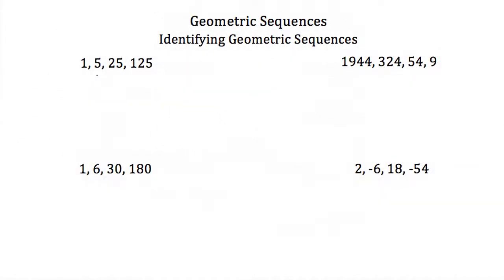So now that we know what a geometric sequence is, let's figure out if these four sequences are geometric. Our first sequence, 1, 5, 25, and 125 — well if we look at 1 and 5, to get to 5 from 1 we would have to multiply by 5. If we multiply 5 by 5, we do indeed get 25. If I multiply 25 by 5, I get 125. So yes, this one is a geometric sequence.